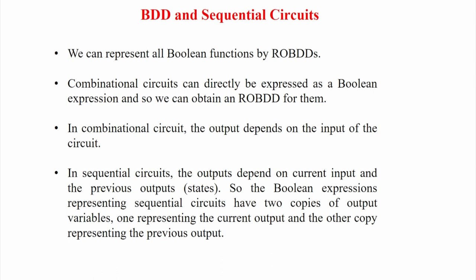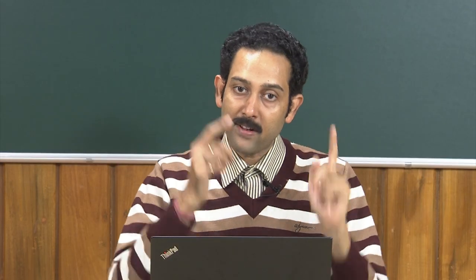Fortunately, labeling algorithms and model checking can be very easily adapted to the BDD structure—that is the beautiful thing about BDDs. In contrast, for high-level decision diagrams or arithmetic decision diagrams, labeling algorithms are not straightforward and people are still working to adapt them. Today we will first see how to model finite state machines using BDDs—because we have seen BDDs for combinational circuits (Boolean functions), and now we need to extend that to sequential circuits.